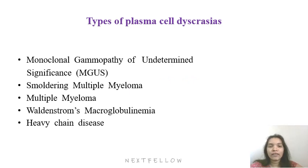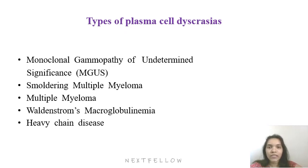Before going to individual discussion, we will see the types of plasma cell dyscrasias. These include monoclonal gammopathy of undetermined significance (MGUS), smoldering multiple myeloma, multiple myeloma, Waldenström's macroglobulinemia, and heavy chain disease. We will look into each of these significant features which are mostly asked in examinations.